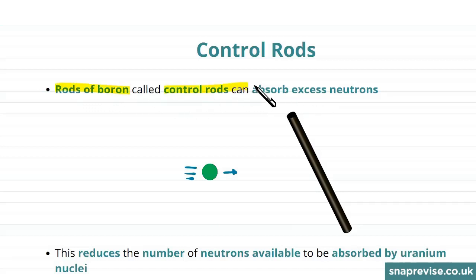Rods of boron called control rods can absorb excess neutrons. So let's say we have a neutron here.